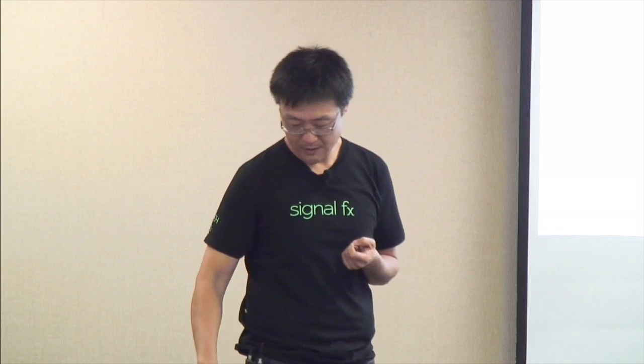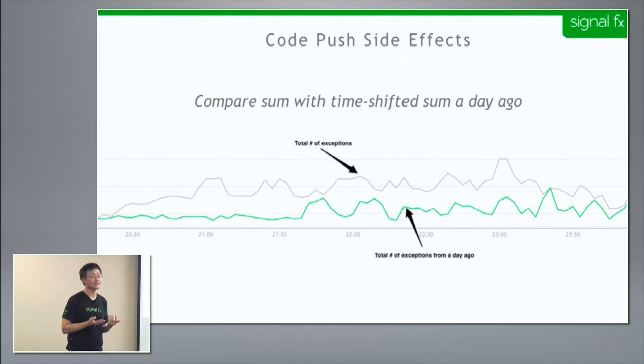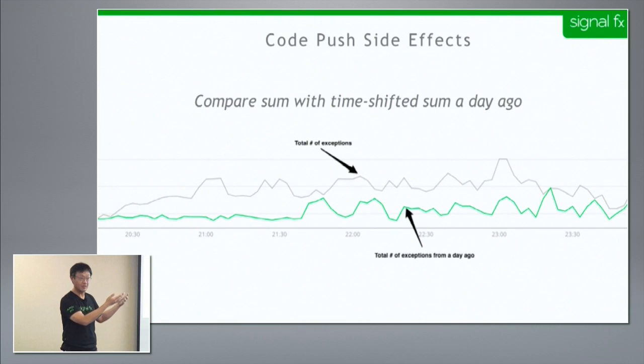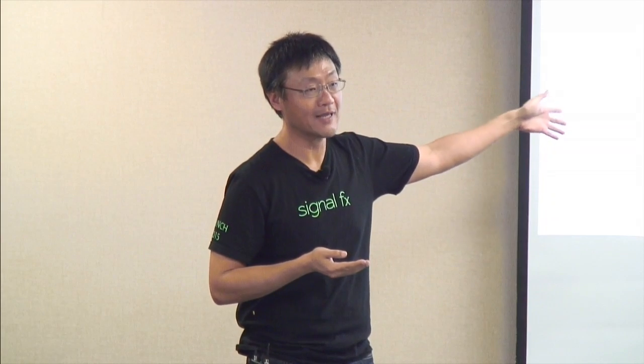The new code worked against a newer version of the downstream analytics service, but didn't work against older versions of the analytics service that hadn't updated the same library used to deserialize the object that the metadata API had serialized. This was a version compatibility issue introduced by the canary.